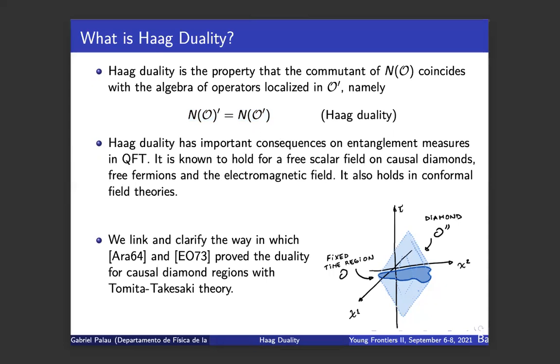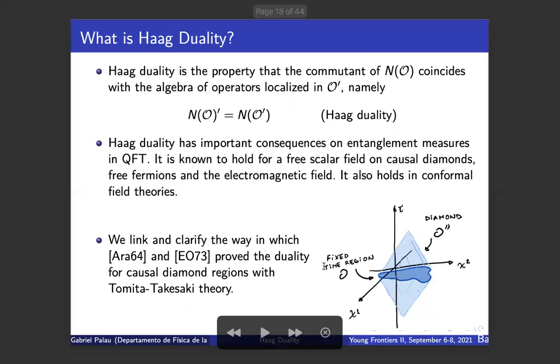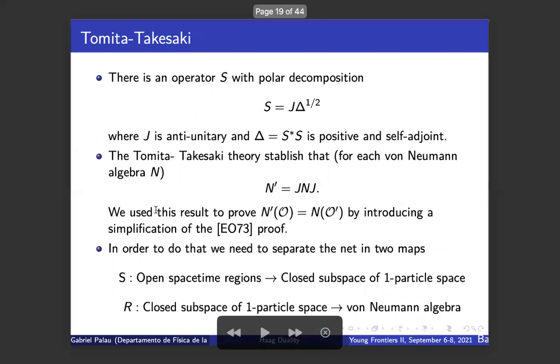Our work is a review, so our proof was expanded for clarity, and we also did the work of linking the results of Araki and Eckmann-Osterwalder, clarifying the points in the Eckmann-Osterwalder proof using Tomita-Takesaki theory in a more direct way. Our proof only works in regions as the one we show in the picture—the domain of dependence over a fixed time region, usually called diamonds over a fixed time region.